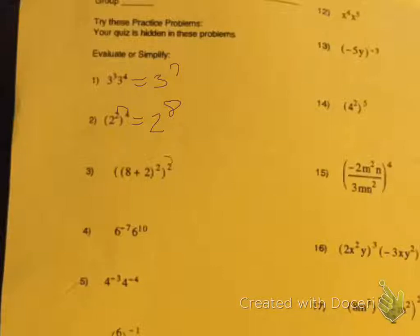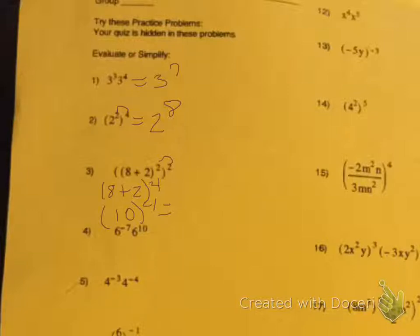Again we're raising a power to a power first, so we're going to get 8 plus 2 to the power of 4. Then we're going to add inside because they are both constant numbers, so we get 8 plus 2 is 10 to the 4th. And then we distribute the 4: 4 times 1 is 4, so you get 10 to the 4th.